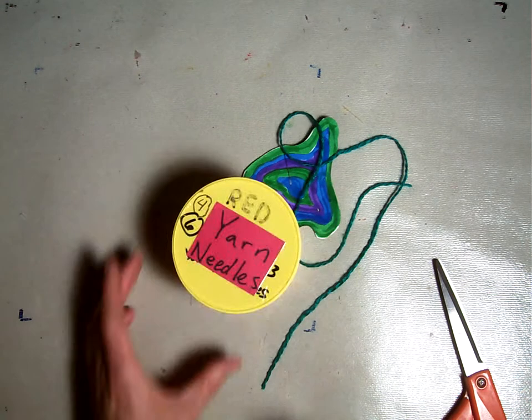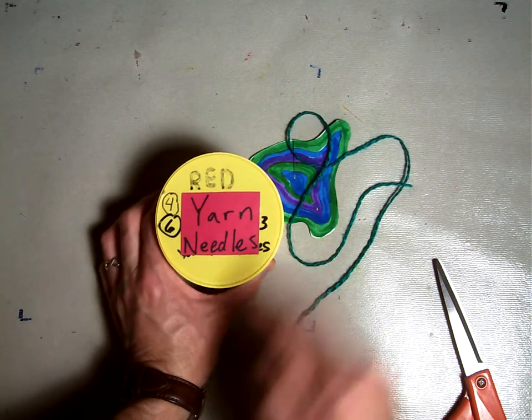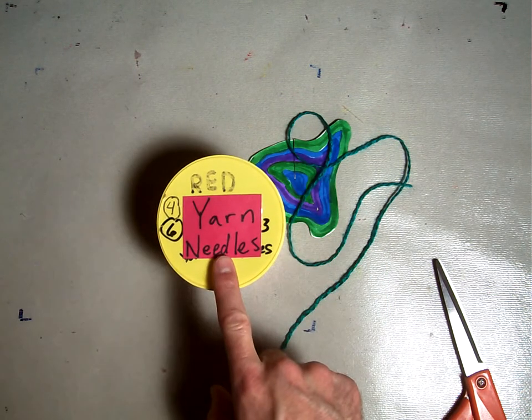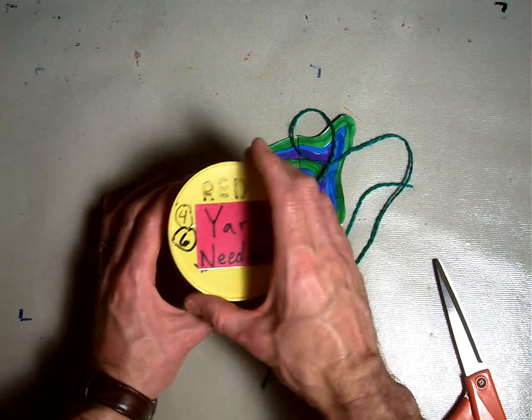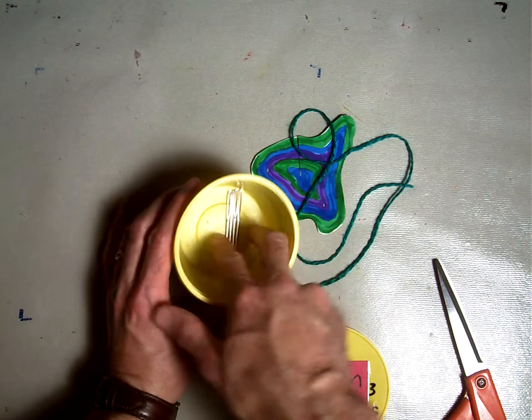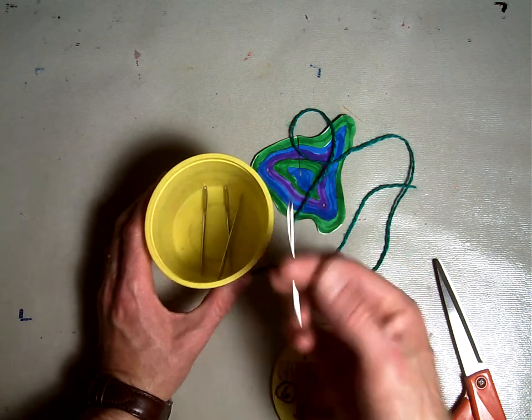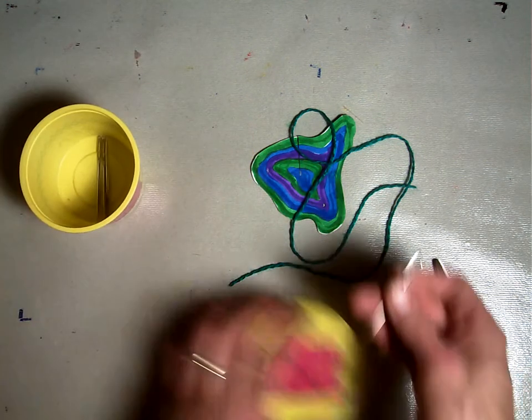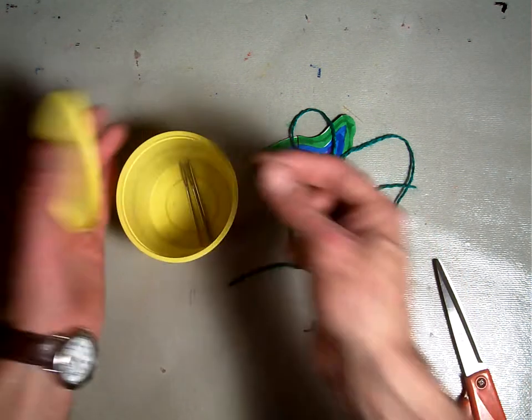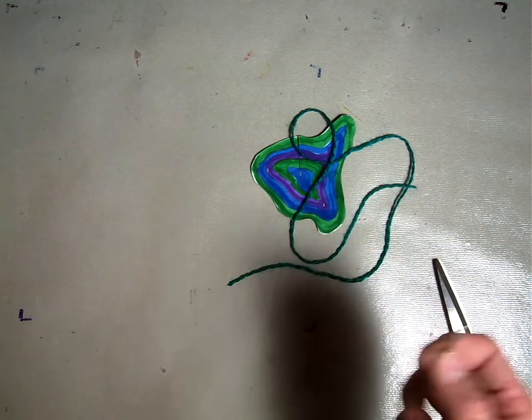You're going to need a piece of yarn. So over on the side counter, there are the yarn containers. Remember, you pull out a little bit, and you can kind of see how it's coming out of this hole. And then use your scissors to cut it out here past the edge so that there's a little tail left over for the next person.